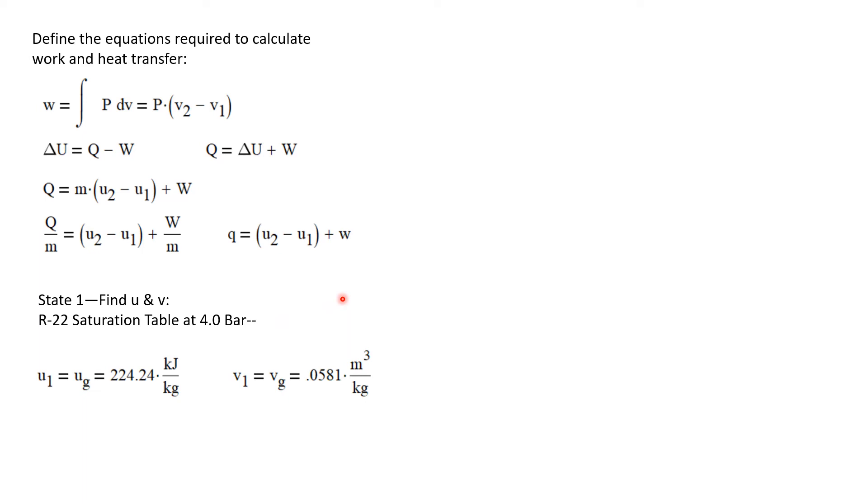Let's go to state 1 and find u and v. We'll use the R-22 saturation table at a pressure of 4 bar. We will find that the internal energy at state 1 is the internal energy of a saturated vapor, and that is 224.24 kilojoules per kilogram.